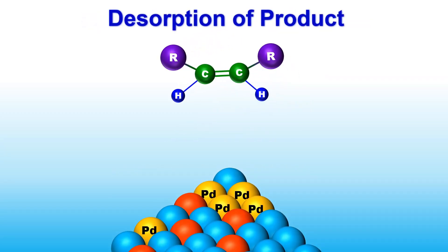Finally, the newly formed alkene is desorbed out of the surface of the catalyst.